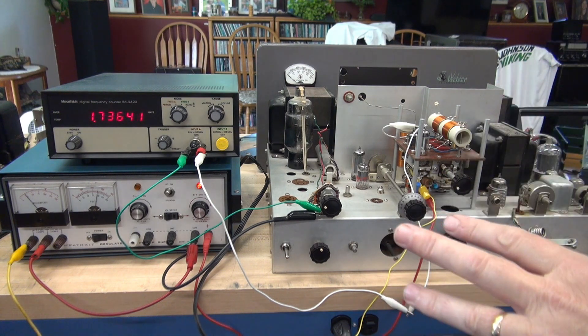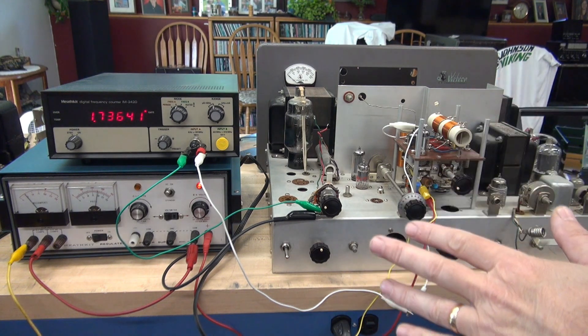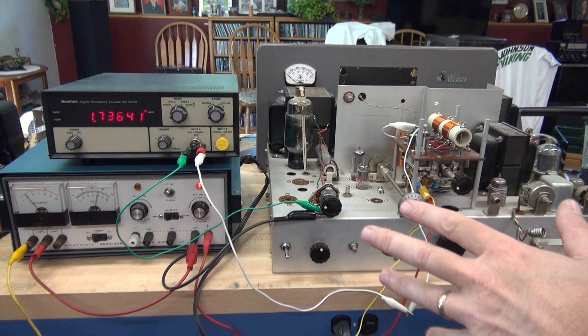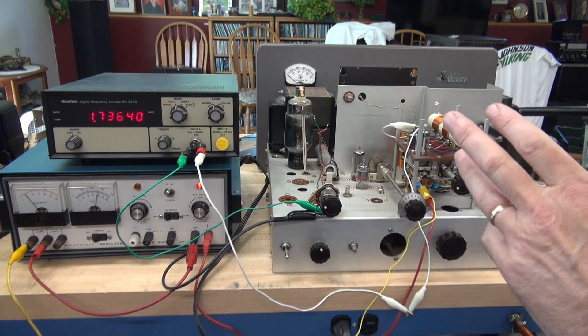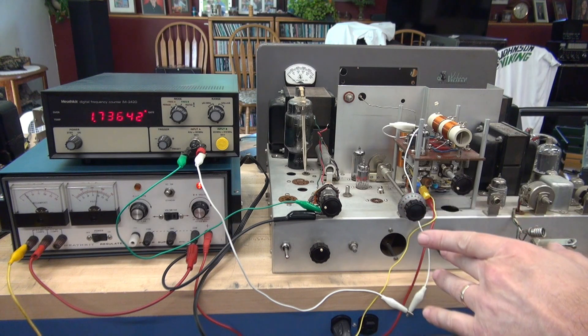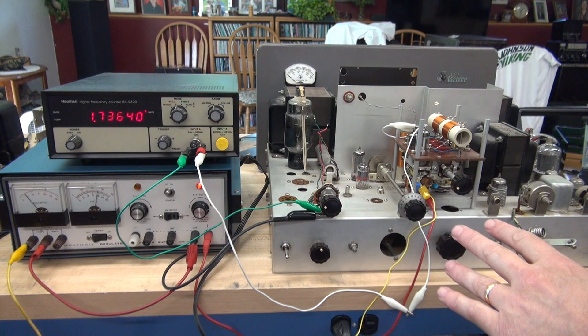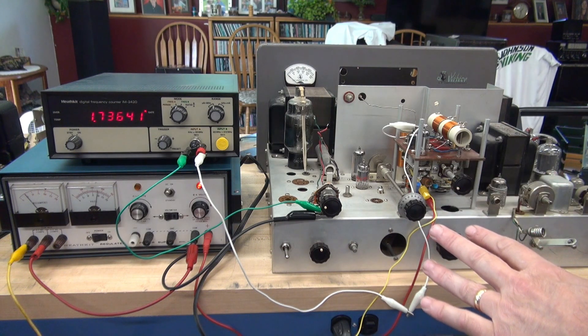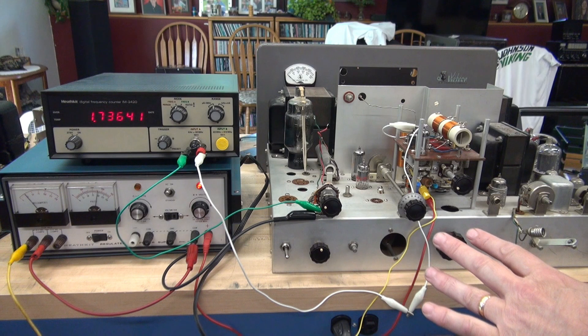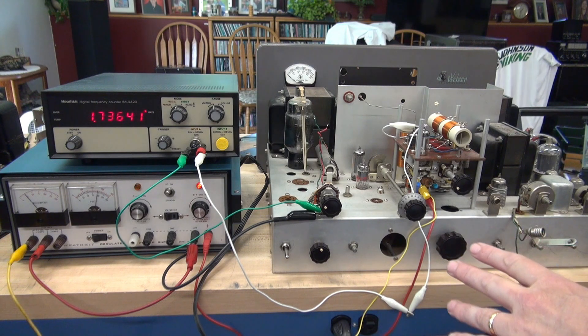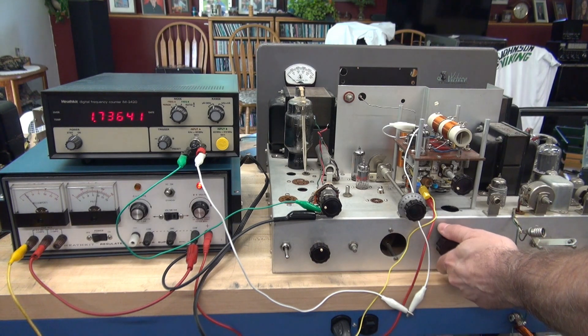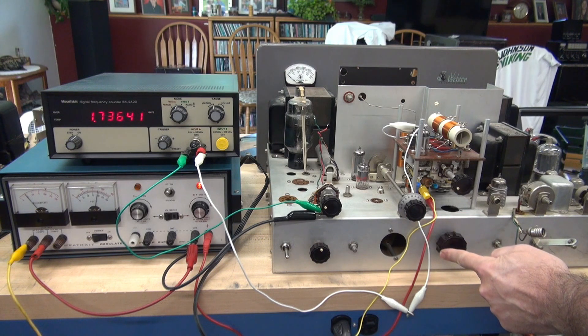Now we're going to check the outputs of the VFO. There's actually only three of them. Okay, so 160 and 80 share approximately 1.75 to 2 megacycles. 40 meter through 10 is about 7 to 7.4 megacycles. And then 11 meters all by himself is 6.725 to 6.84 megacycles. So we're going to start out on the 80 meter band.